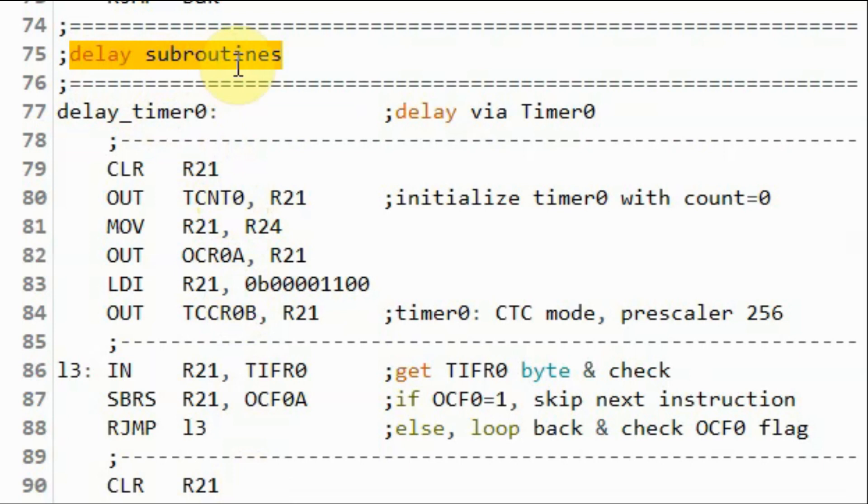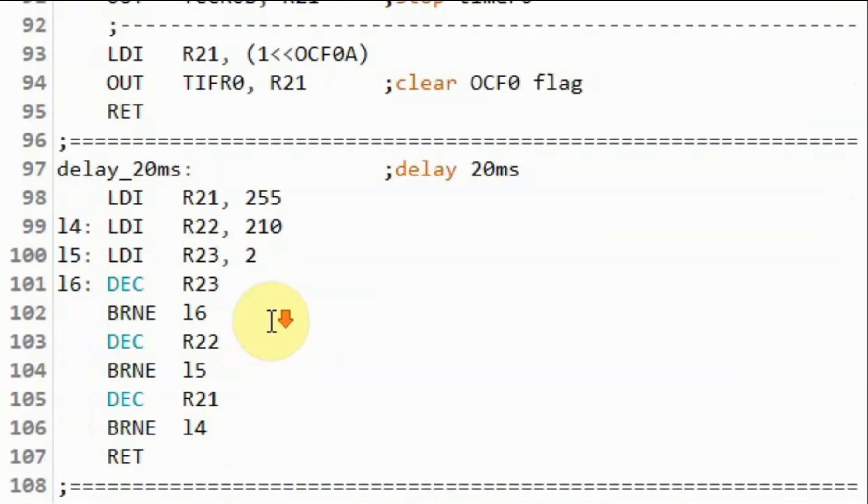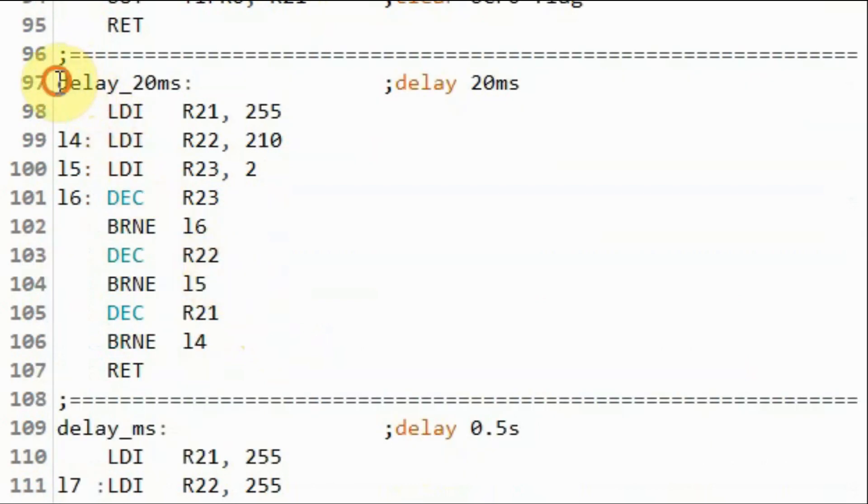Finally, we have the delay subroutines. This is the timer 0 subroutine to give us delays between 1 millisecond and 2 milliseconds. And this is the delay subroutine used to give us the 20 milliseconds. And the delay subroutine here gives us a half a second. Now, these two subroutines use nested loops to implement the delay.